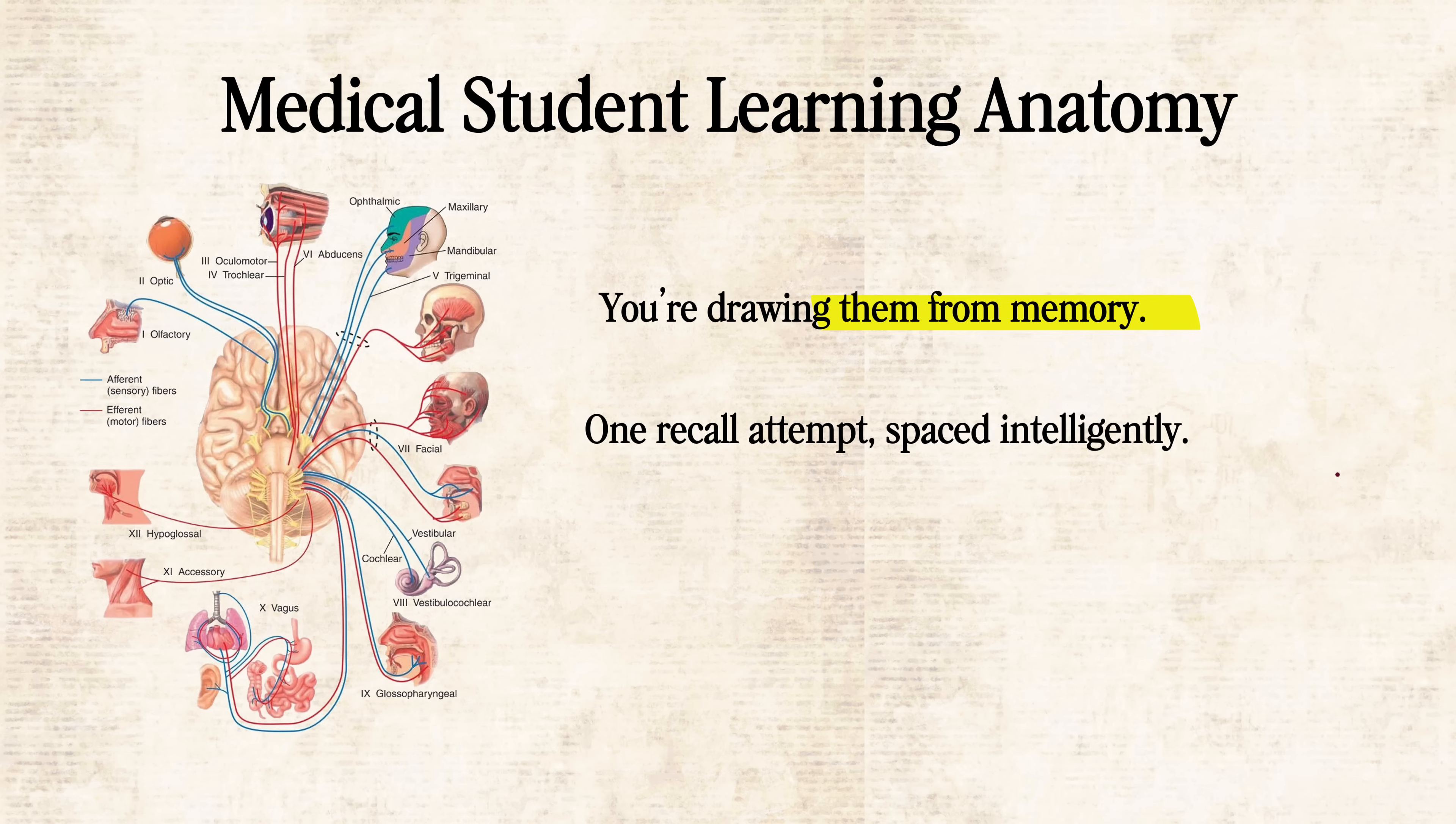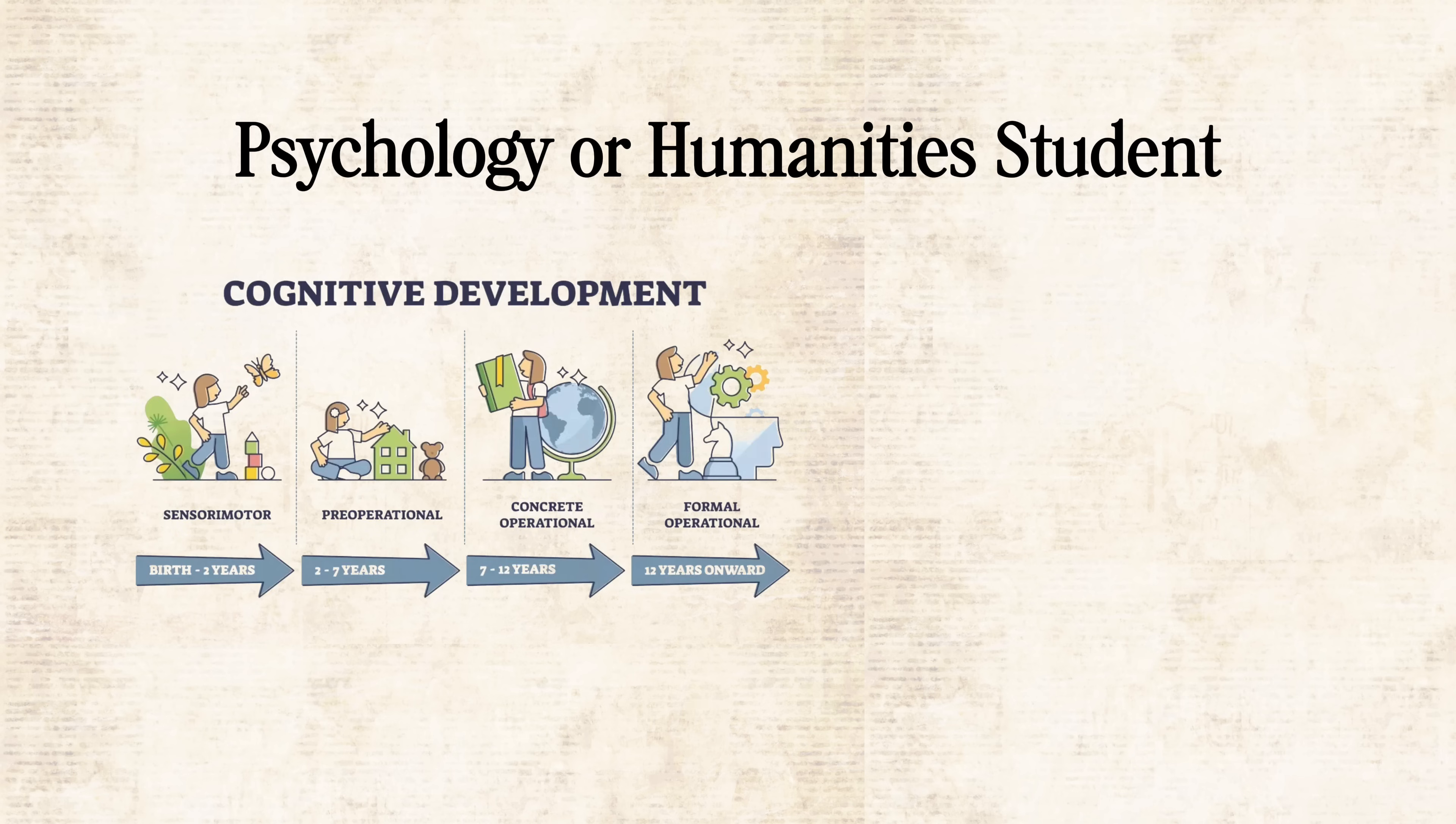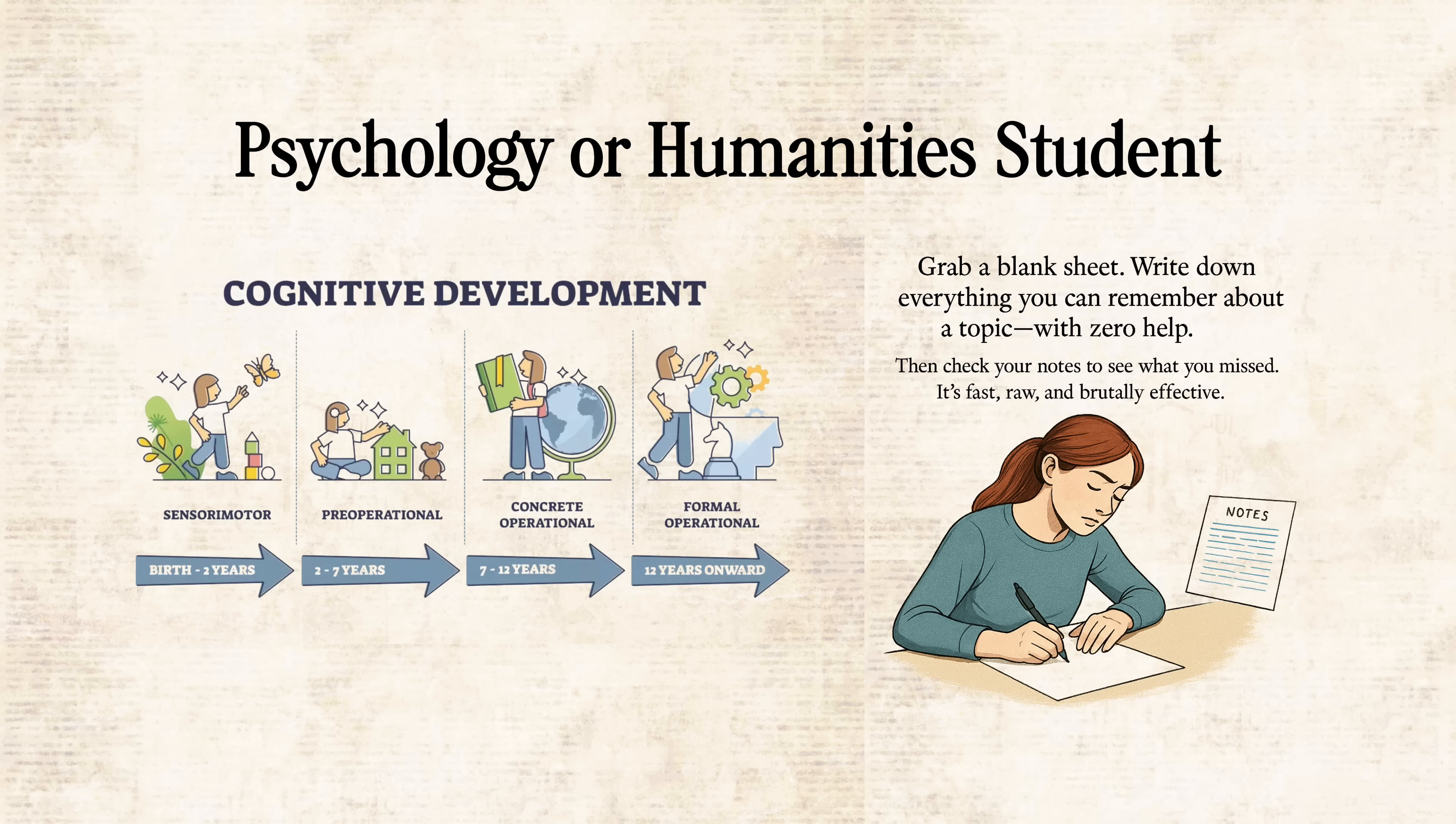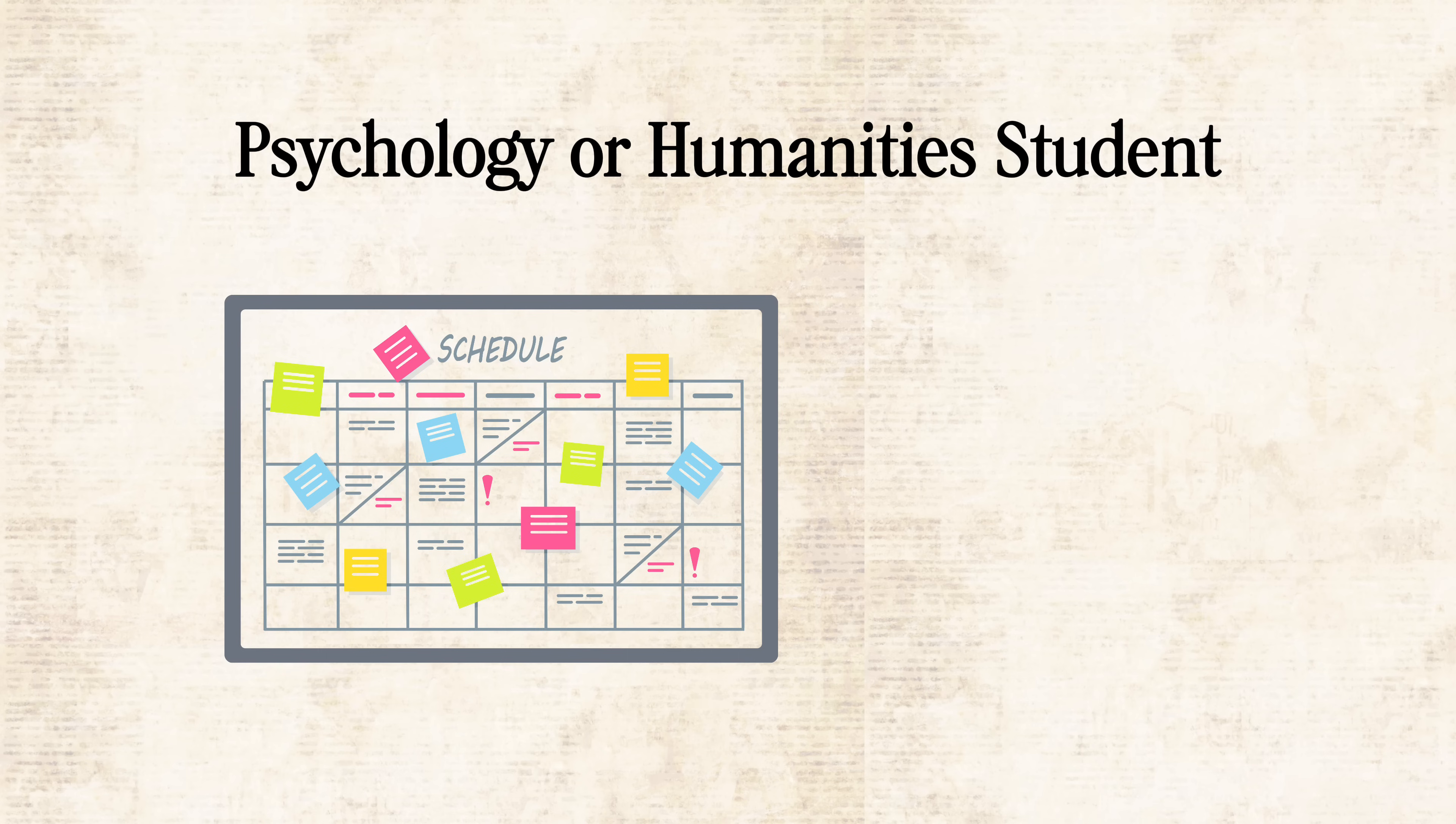Say you're reading a theory-heavy chapter on Piaget's cognitive stages. After reading, close the book and write down, in your own words, what each stage is. Then try explaining it out loud. That's active recall. Next, schedule reviews for that topic. Blurting again in two days, then again in five. Focus only on what you couldn't recall the first time.